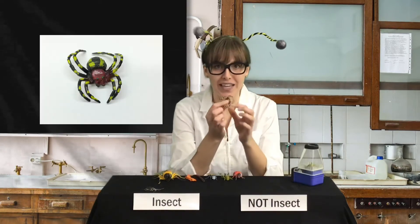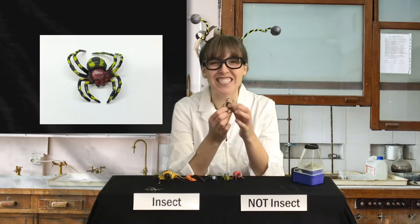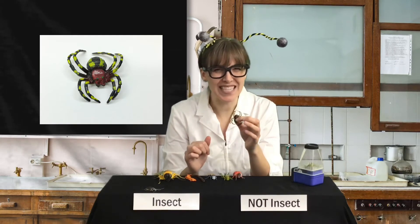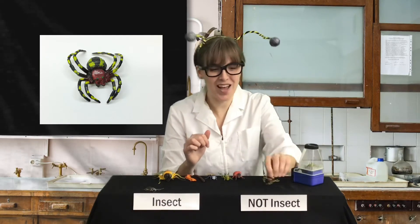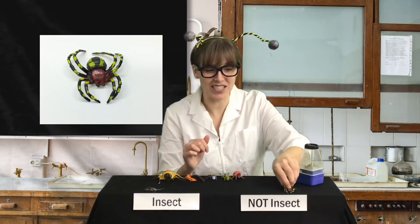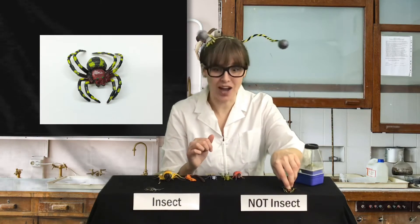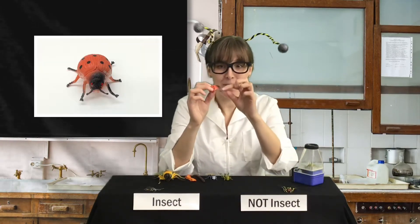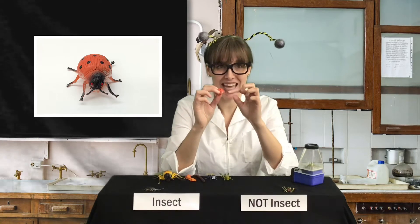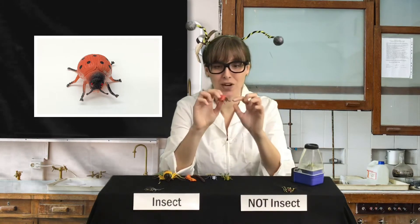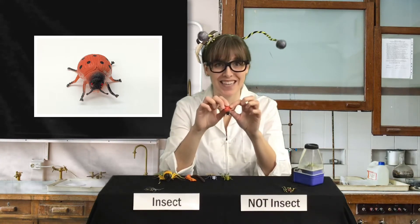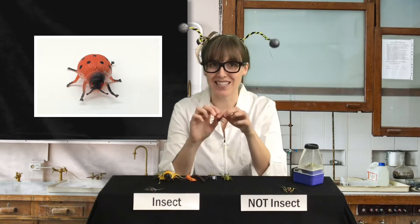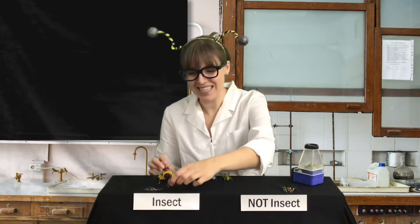How about a spider? A spider has eight legs. Is that an insect? No, it's not. That is an arachnid. That's not an insect. How about a ladybug? A ladybug has antennas, three body parts, and six legs. Is that an insect? Right. That's an insect.